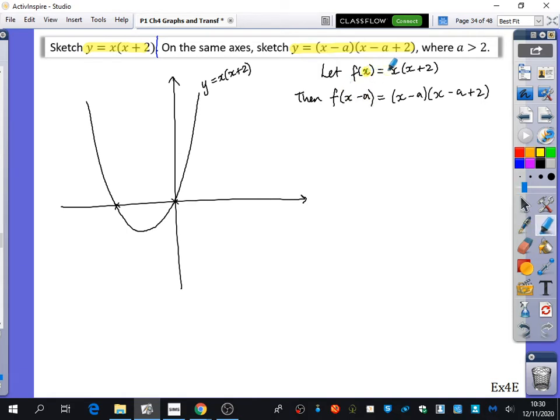Which means that we're trying to do a translation of, what's the translation going to be? Plus a, 0. And it tells me something about a. So it means it's going to be moving more than two spaces to the right, because it says that a is bigger than 2. So because a is bigger than 2, it is going to be moving more than two spaces to the right.